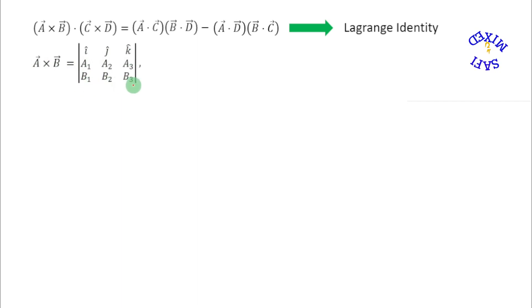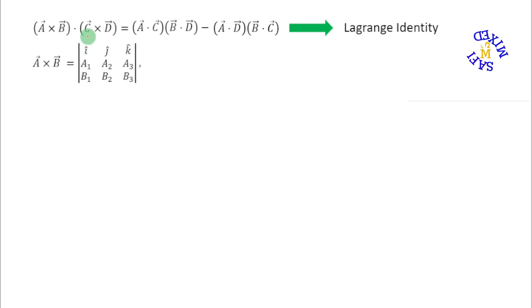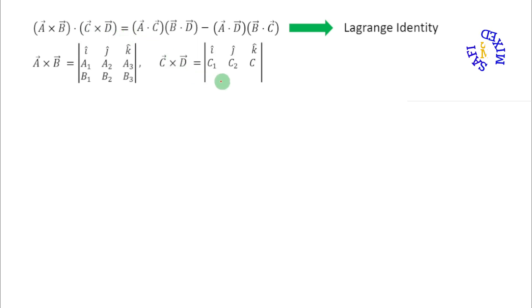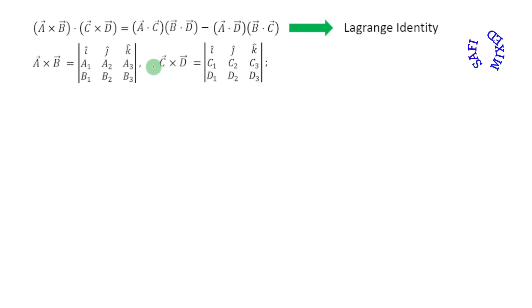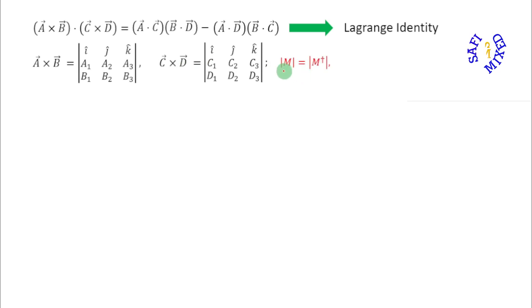Similarly, b1, b2, and b3 are the components of vector b. The vector product of vectors c and d can also be expressed in the form of a determinant, where c1, c2, c3 and d1, d2, d3 are the components of vectors c and d respectively. We know that the determinant of a matrix M equals the determinant of the transpose of matrix M.